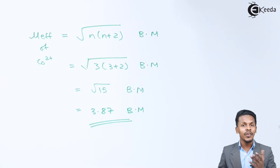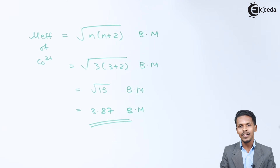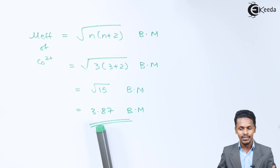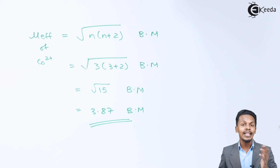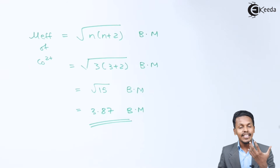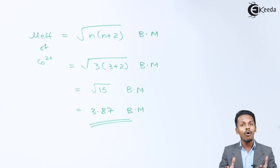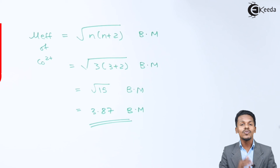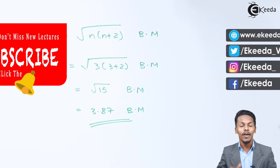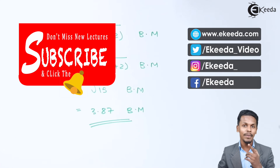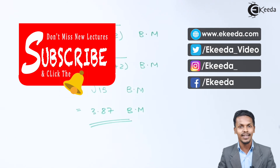The magnetic moment of Co²⁺ is √15 Bohr magnetons, which is found to be 3.87 Bohr magnetons. Comparing with Fe³⁺, whose value was 5.91 Bohr magnetons, we can see that the Fe³⁺ value is greater. This means iron is more paramagnetic in nature, while Co²⁺ is less paramagnetic. Depending on the value of the Bohr magneton we can easily determine the magnetic nature of the compound. Thank you friends for watching this video.